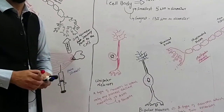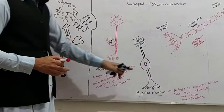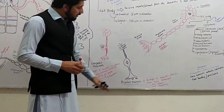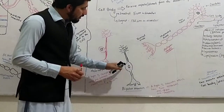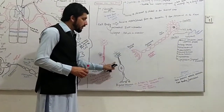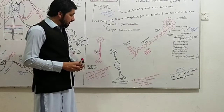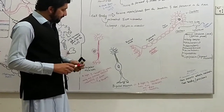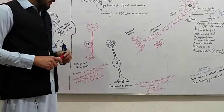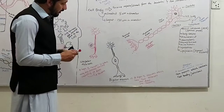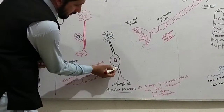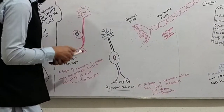A unipolar neuron has only one extension from the cell body, which is called the axon.